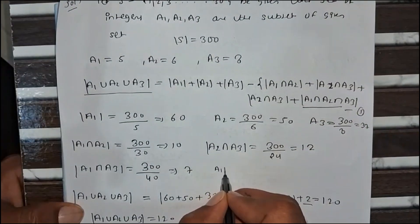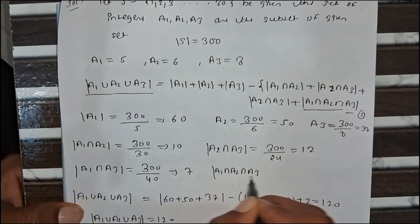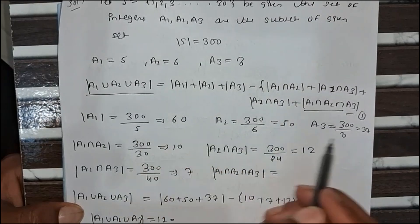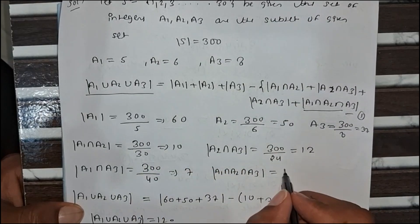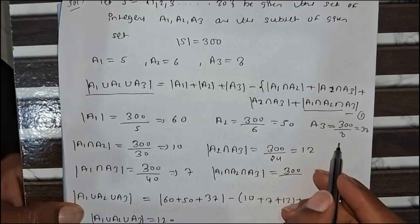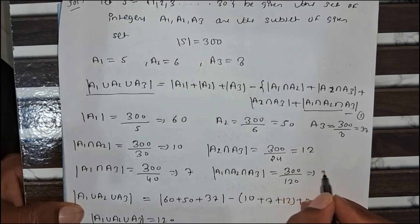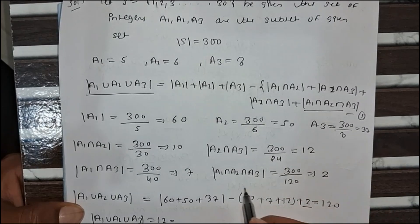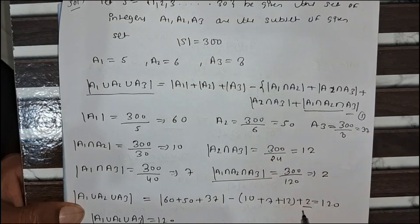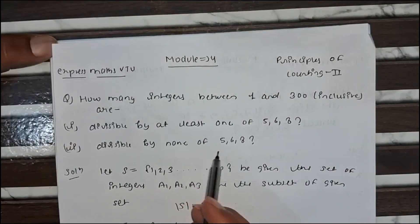The value of A1 ∩ A2 ∩ A3 comes from LCM(5, 6, 8) = 120, so 300 divided by 120 = 2. That is why the last term in the formula is 2.